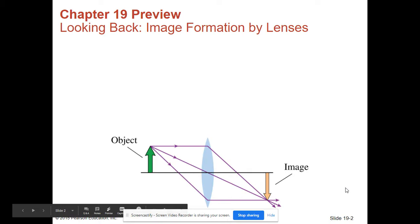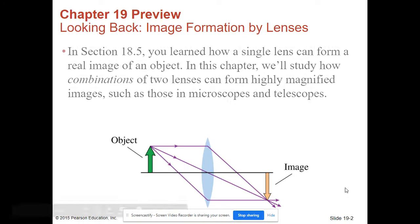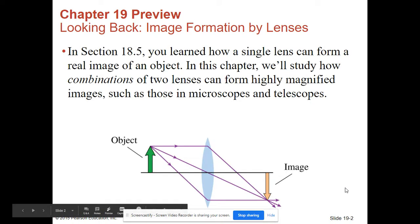Looking back, image formation by lenses. In Section 18.5, you learned how a single lens can form a real image of an object. In this chapter, we'll study how combinations of two lenses can form highly magnified images, such as those in microscopes and telescopes.